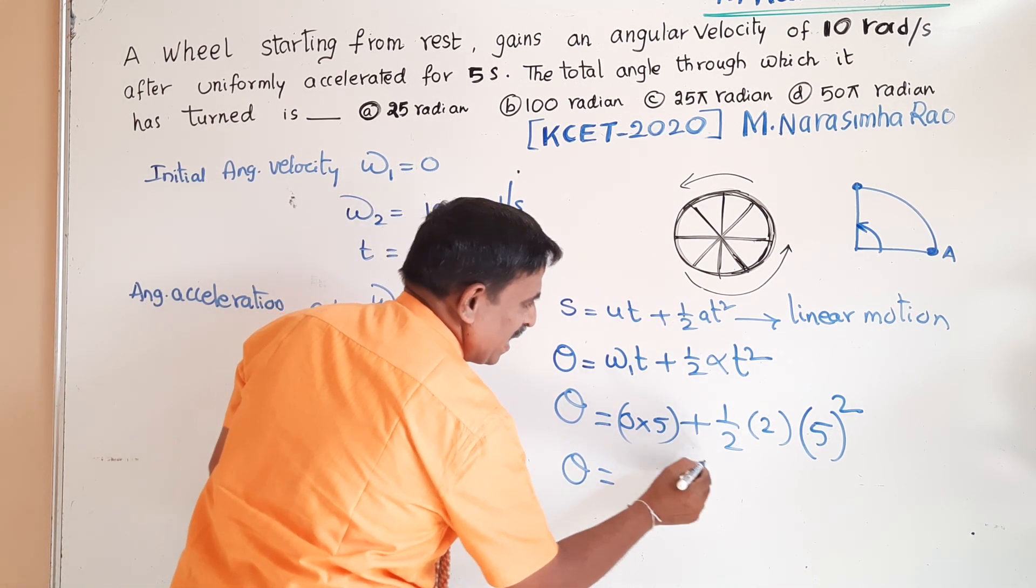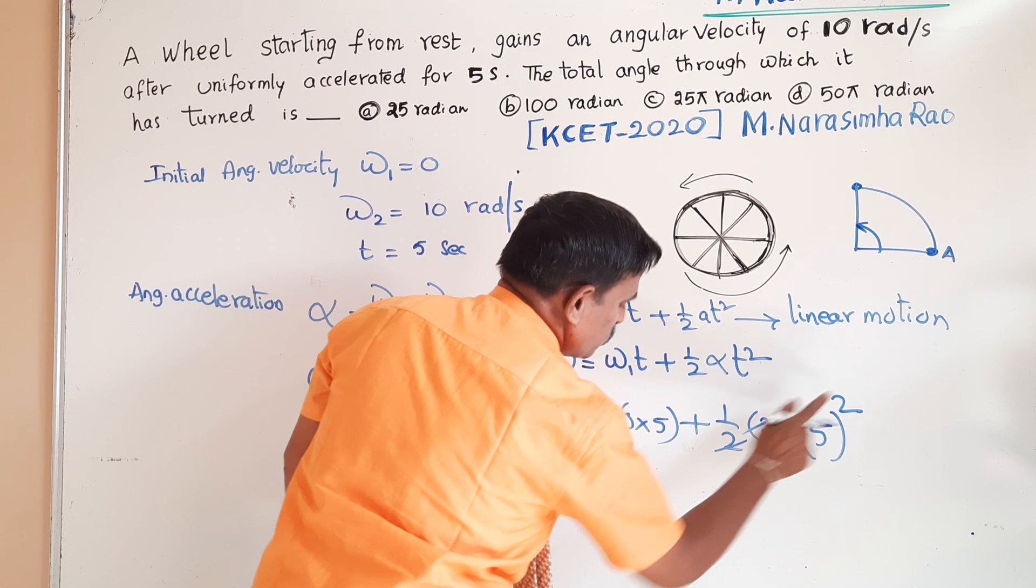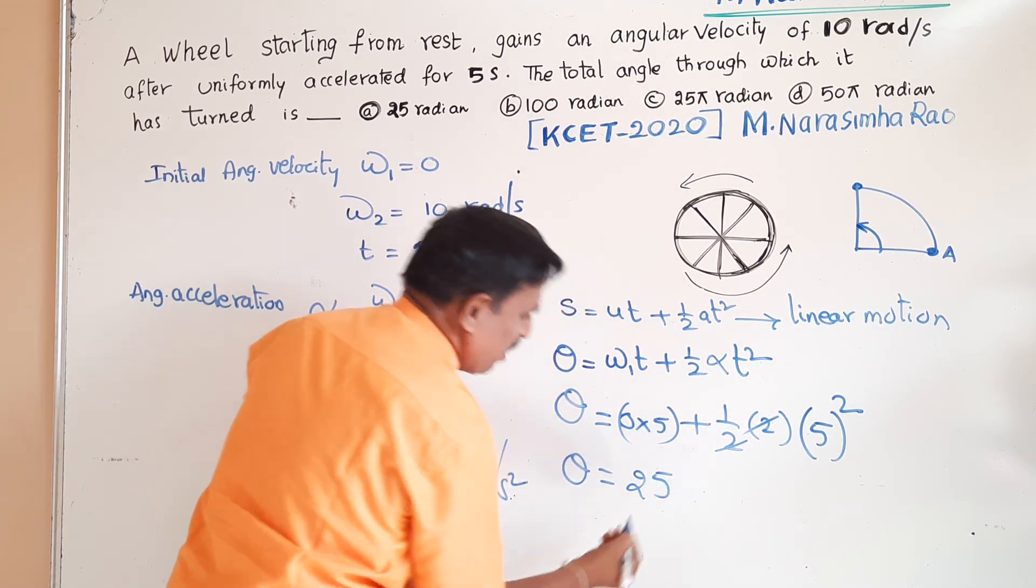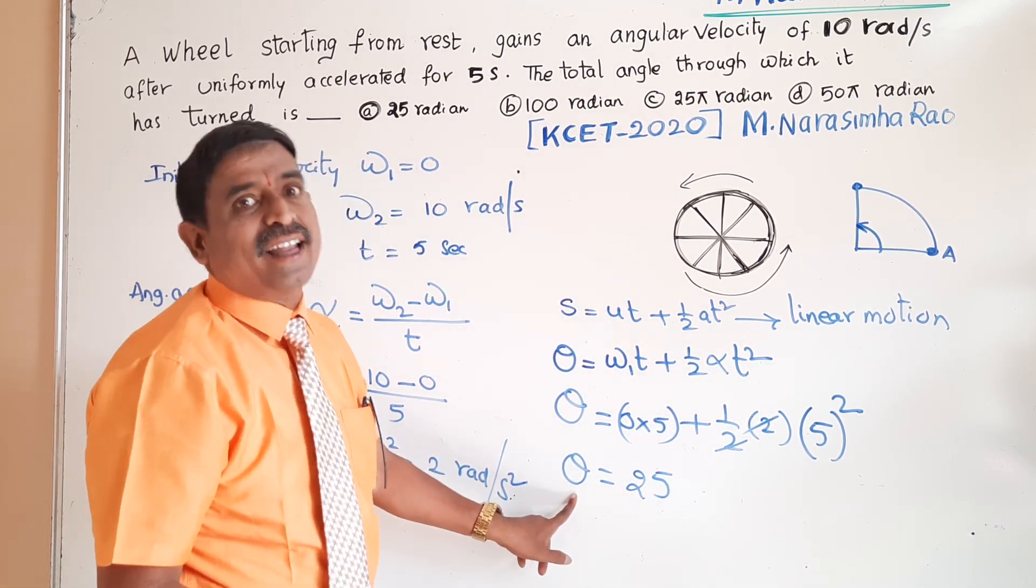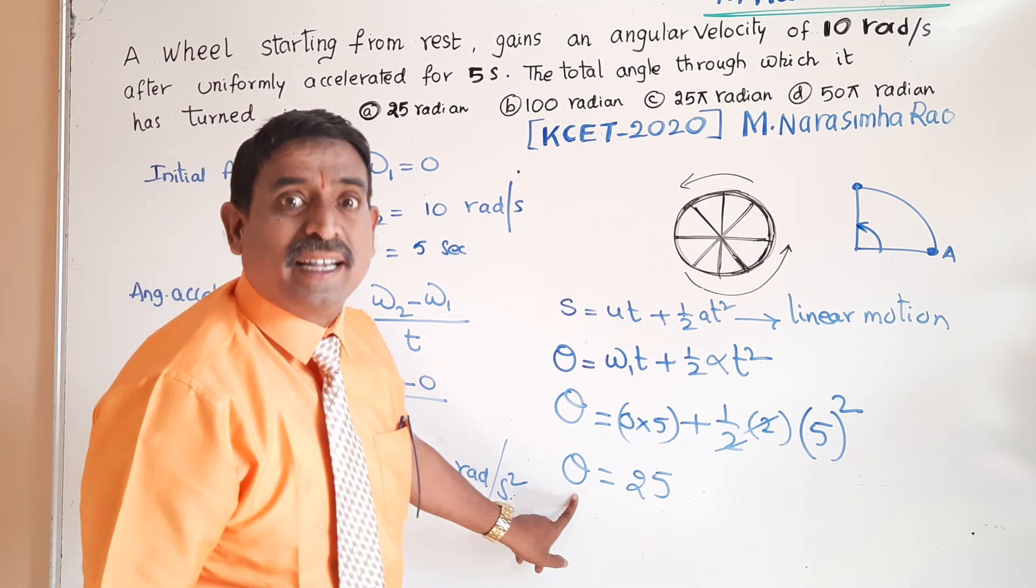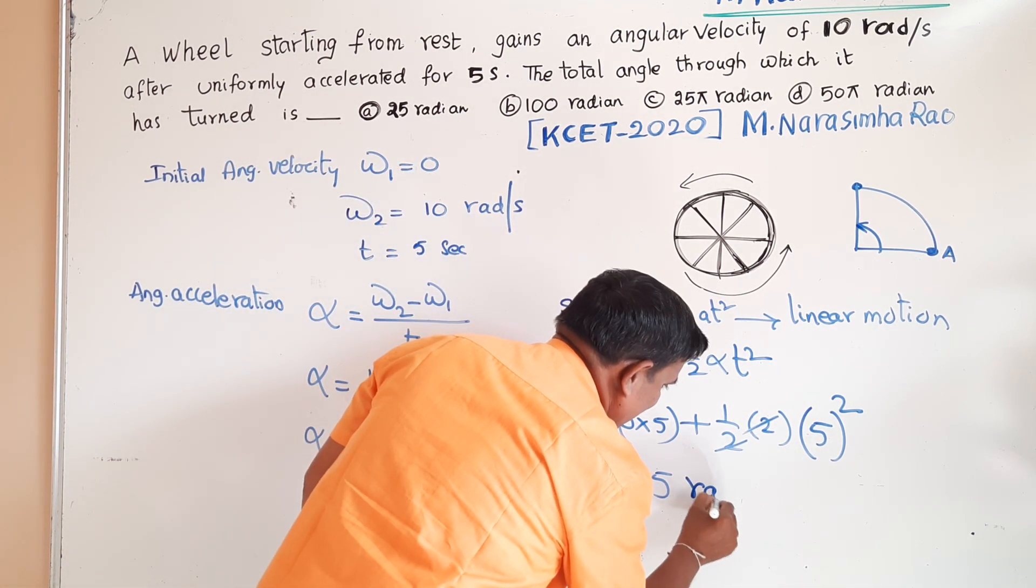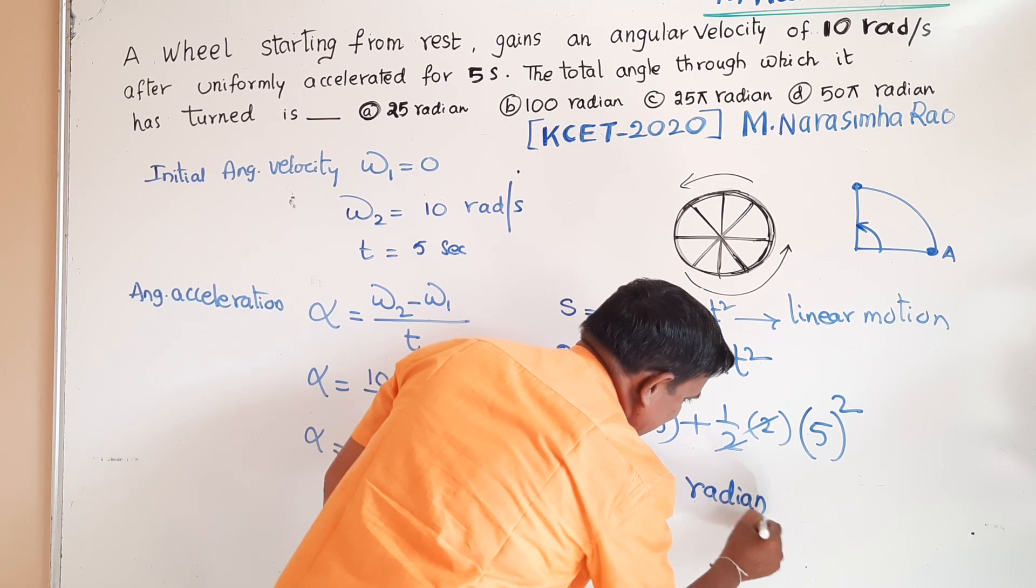0 into anything is 0. 2 cancels, 5 square is 25. Theta, the angular displacement, is the angle. The angle unit is radian: 25 radian.